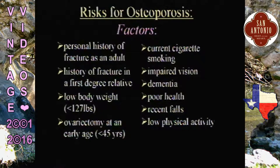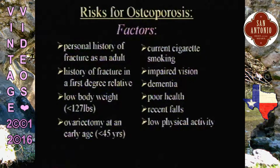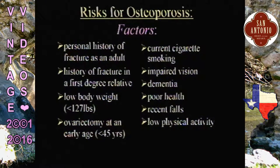If someone already has a fracture, that puts them at risk. If a fracture occurred in a first-degree relative, there's a family history of osteoporosis. Low body weight, premature menopause, and cigarette smoking are also risk factors. Dementia, impaired vision, and poor health habits increase the risk of falling and fractures. So those are considered risk factors for osteoporotic fractures.